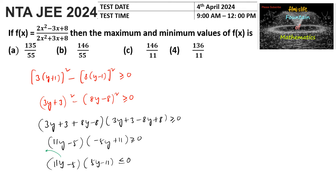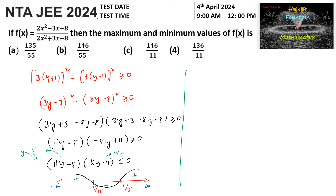The critical points are y = 5/11 and y = 11/5. Placing these on the number line and applying the wavy curve method, the expression (11y - 5)(5y - 11) ≤ 0 holds in the region between the roots. Therefore y belongs to [5/11, 11/5], meaning f(x) ∈ [5/11, 11/5].